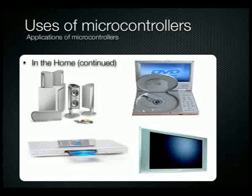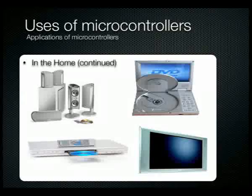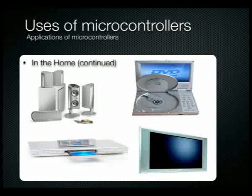Surround sound packages have microcontrollers built in — a digital signal processing microcontroller takes the Dolby-encoded information and splits it out to five channels so you can hear a jet plane go across the room or explosions coming from the right direction during a film. DVD players are riddled with microprocessors — at least three or four inside. One slow processor handles user interaction, since humans operate very slowly compared to the digital domain.